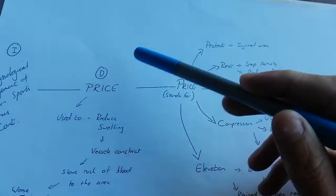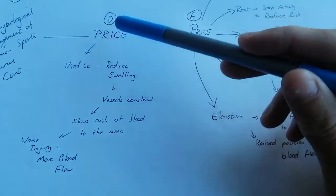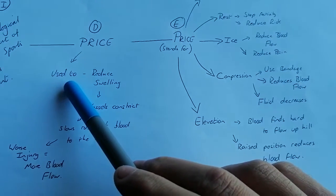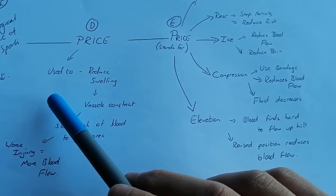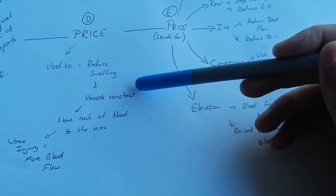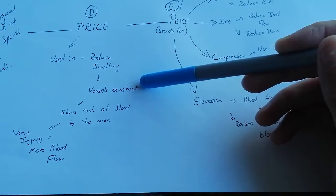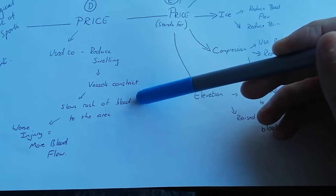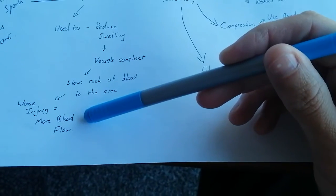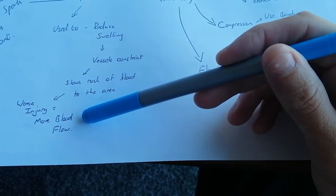We then move down the branch. So to begin to get past marks, we're looking to describe what price is. So, you would be writing something along the lines of, price is used to help to reduce the swelling in injuries. It does this by constricting the vessels, which is making the vessels smaller, to slow down the rush of blood to the injured area and therefore reduce swelling. If the injury is particularly bad, then the blood flow will be heavier.